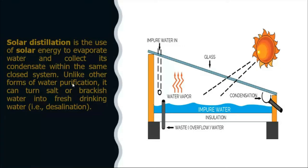Solar distillation is basically used in locations where we need potable water. Salt water is heated, water evaporates, and the water vapor then condenses. The condensed water is collected for further use, while the salt remains behind.